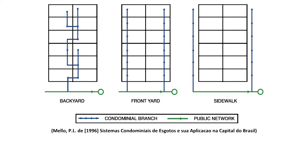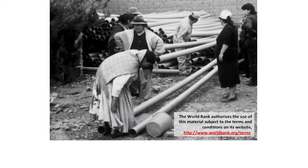This is because they do not have to be protected from heavy traffic and because they use small bore or small diameter pipe. This photograph clearly shows the size of the small diameter sewer pipe used in neighborhood condominial systems.